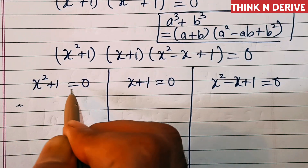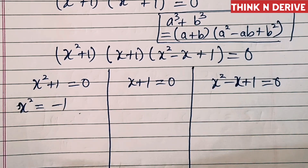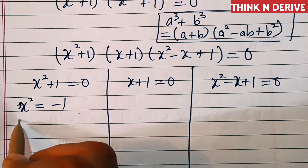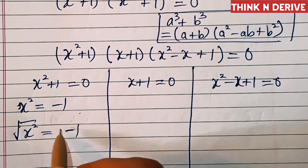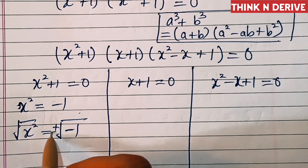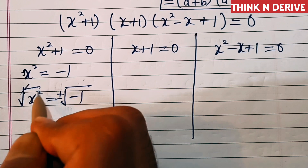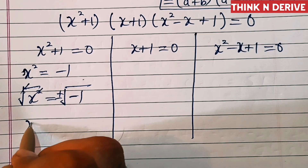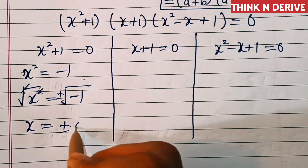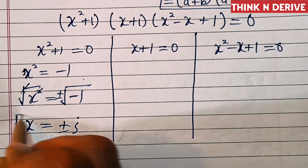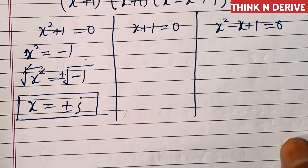From the first factor, x² + 1 = 0, we get x² = -1. Applying square root on both sides gives x = ±√(-1). The square root of -1 is iota (i), so x = ±i. These are the first two solutions.